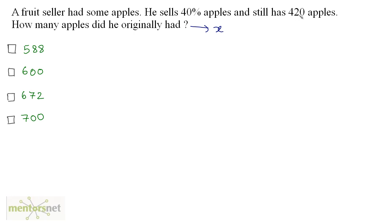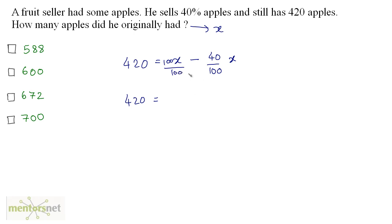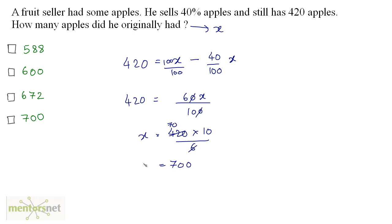Since he still has 420 apples, we get: 420 = x minus 40/100 times x, which simplifies to 420 = 60x/100. Cancelling zeros, x = 420 times 10 divided by 6. Since 6 times 70 is 420, x equals 700. So the total number of apples the seller originally had is 700 — option D.